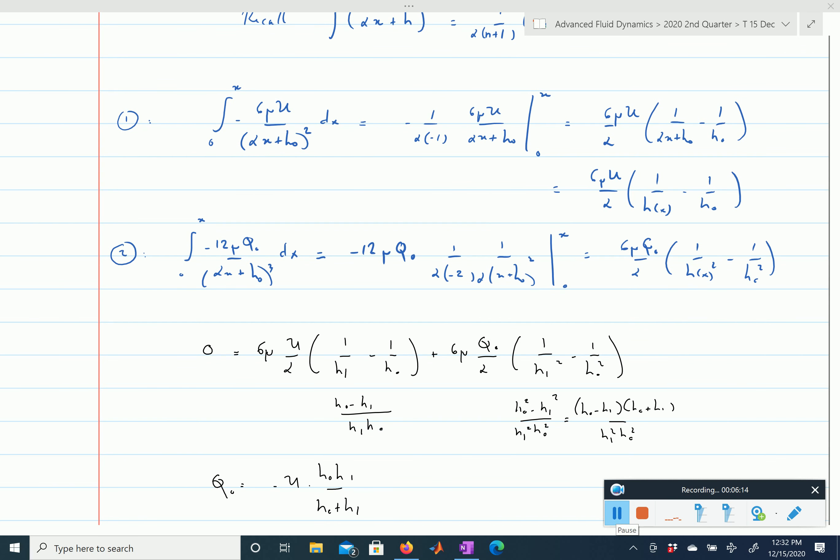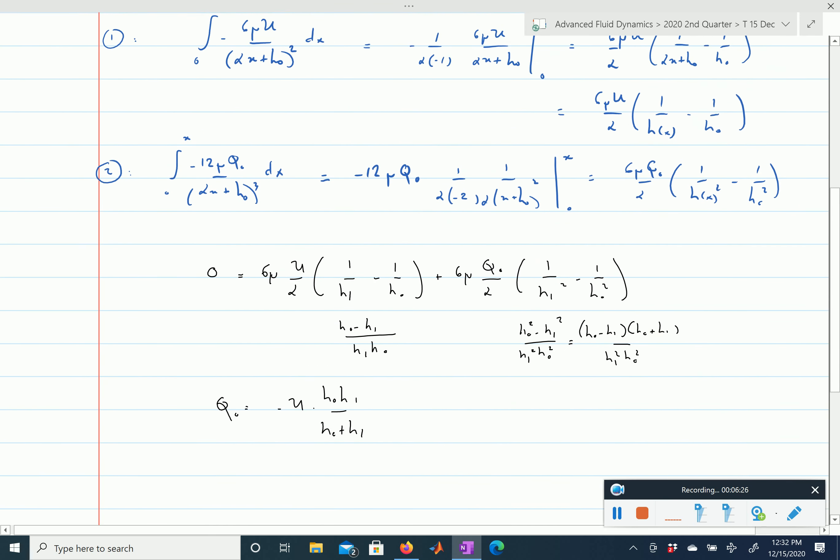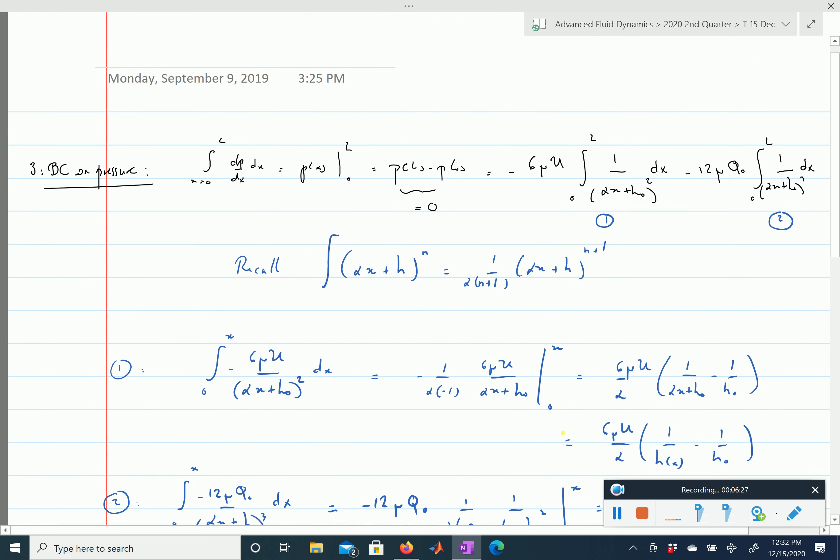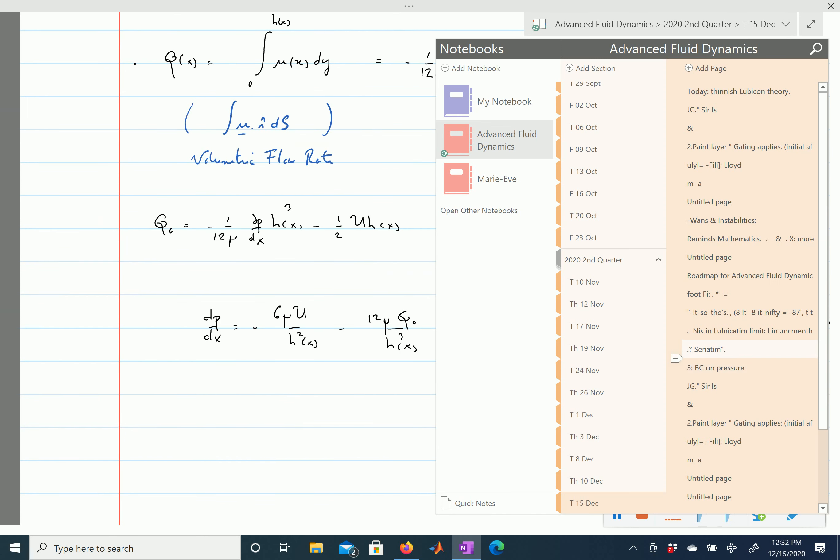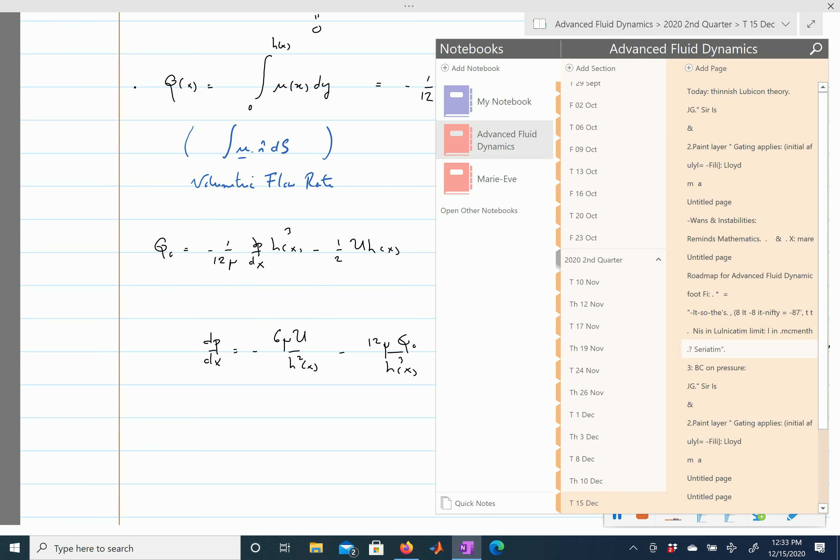And that's what you see in the final expression, so if now I replace q0 by what we just found, by this minus u h0 h1 divided by h0 plus h1 in our expression for the pressure gradient, remember our pressure gradient is equal to this here, right? Then we'll have our two terms, our two balancing terms, and we finally find a pressure distribution, which is equal to...